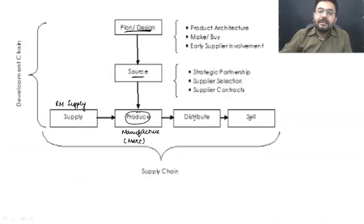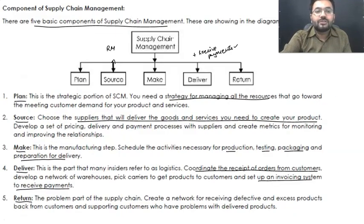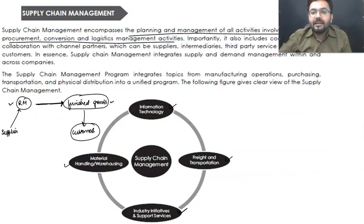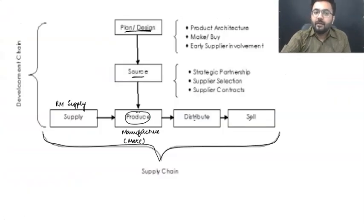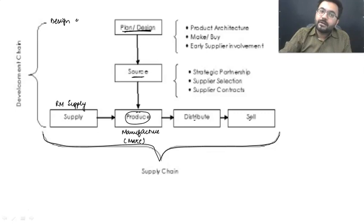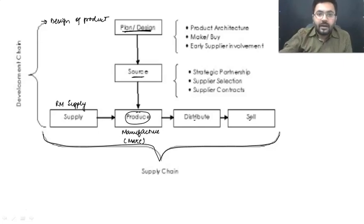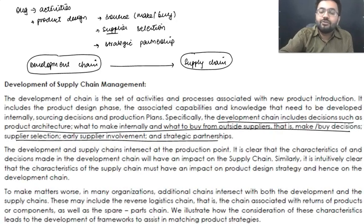What is development chain and what is supply chain? Supply chain is all about manufacturing a particular product and delivery — including sourcing, procurement, conversion, and delivery, and logistic management activities — from manufacturing to delivery. But if I talk about the development part, that means research and development. The plan and design includes what kind of product you are going to design — the design of your product. If there are n number of cars, how can you make your product different?